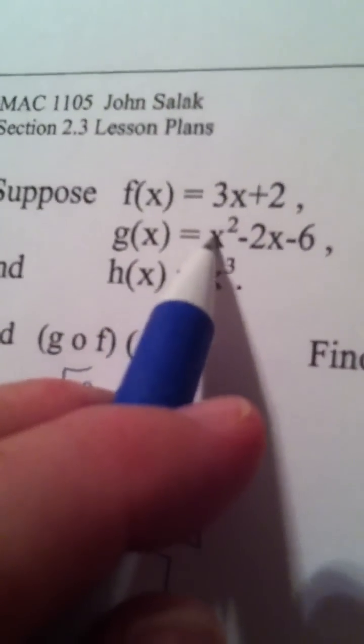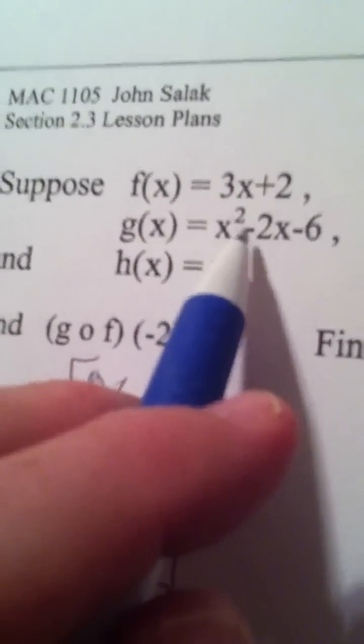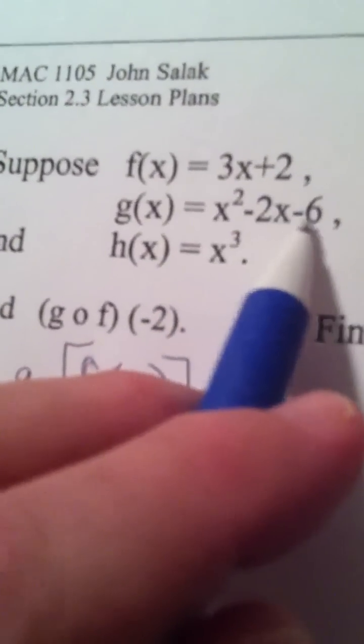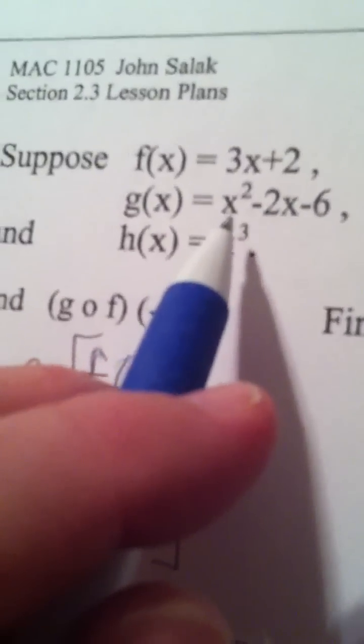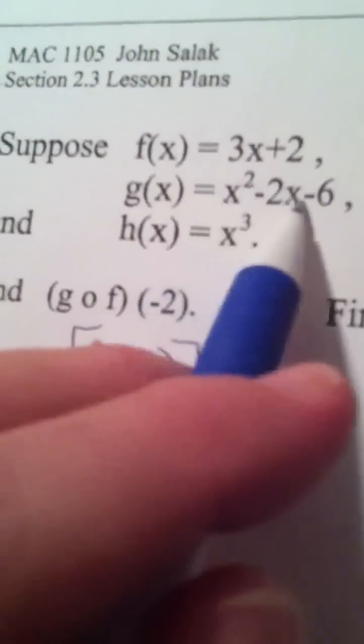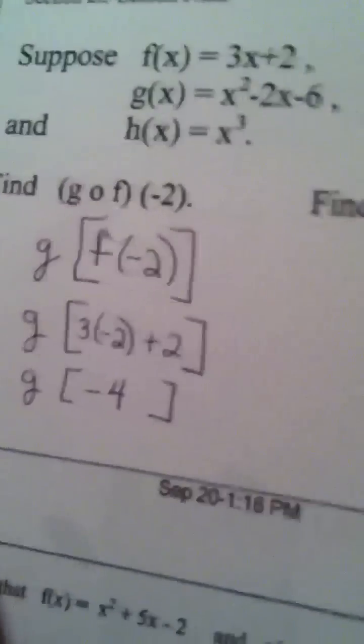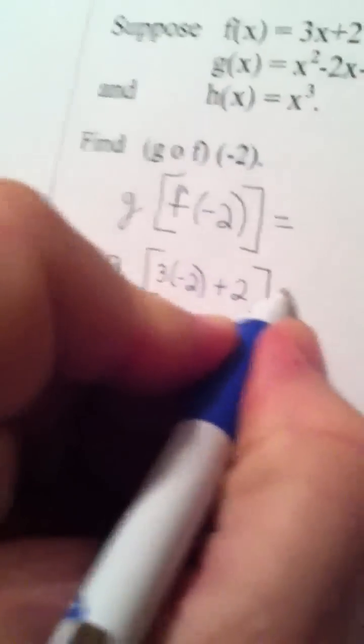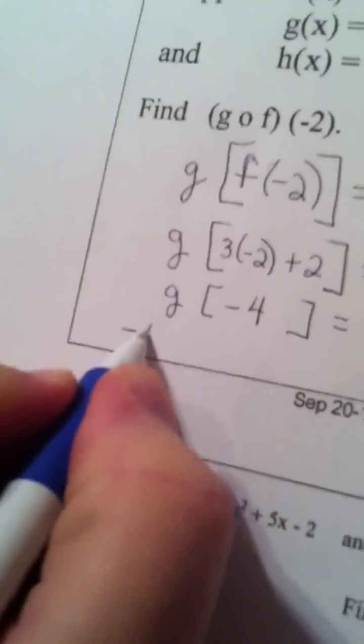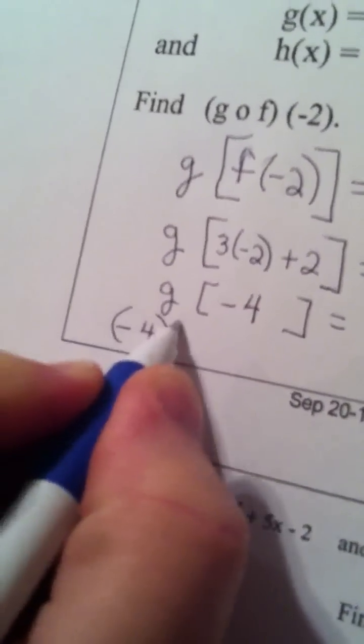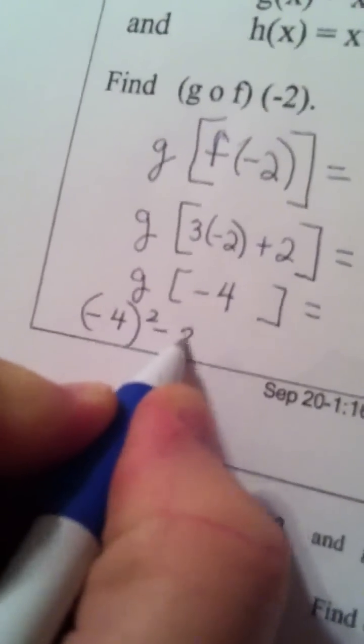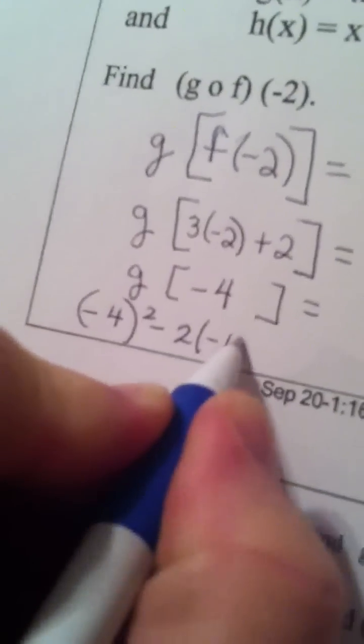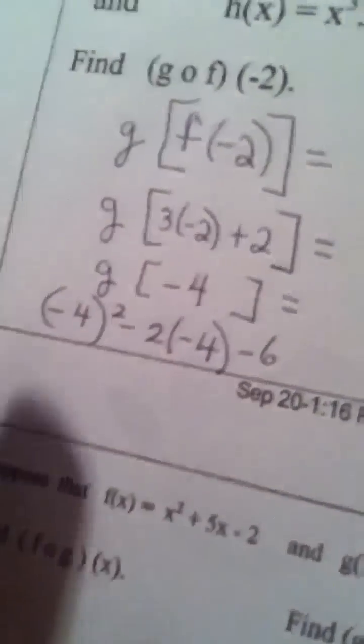g takes anything and squares it, minus 2 times anything, minus 6. In other words, when I say anything, this x is replaced with what you're plugging in. So this would become negative 4 quantity squared, minus 2 times negative 4, minus 6.